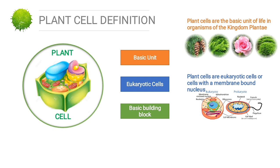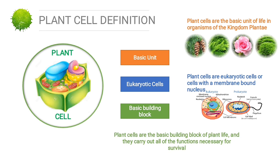Unlike prokaryotic cells, the DNA in a plant cell is housed within an inner nucleus enveloped by a membrane. Animals and protists also have eukaryotic cells, while bacteria and archaea have simpler prokaryotic cells.